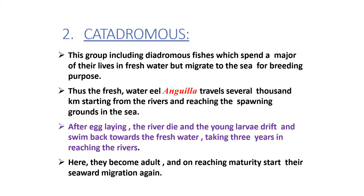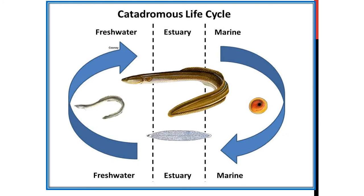In the rivers they become adult and on reaching maturity start their seaward migration again. In this slide you can see the catadromous life cycle. The first zone is fresh water, the second is estuary and the third is marine water. You can see the Anguilla eel fishes here.